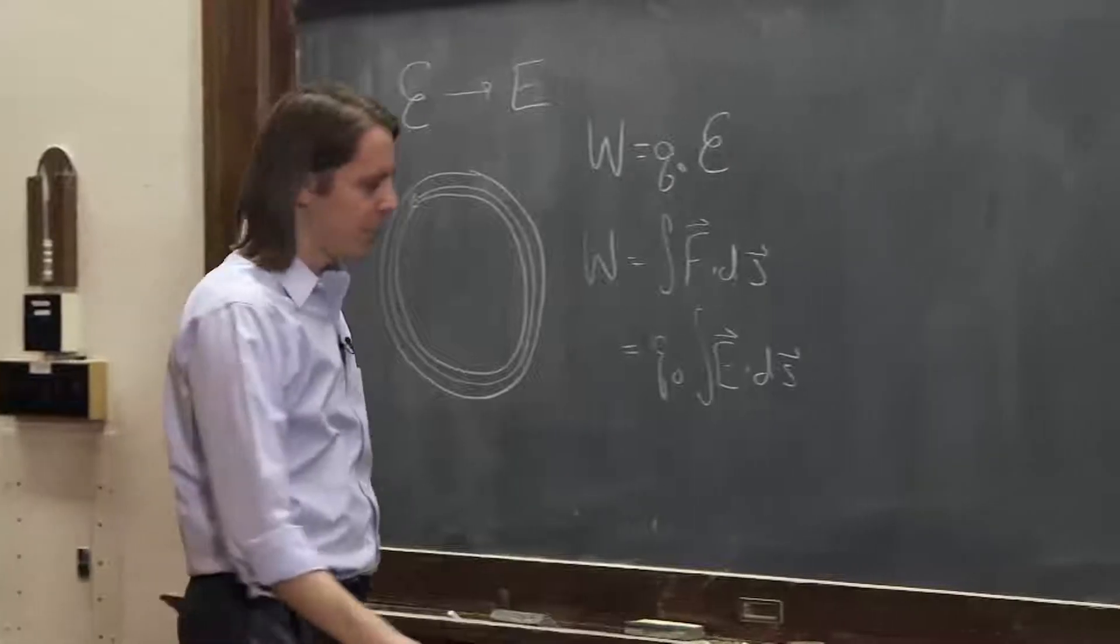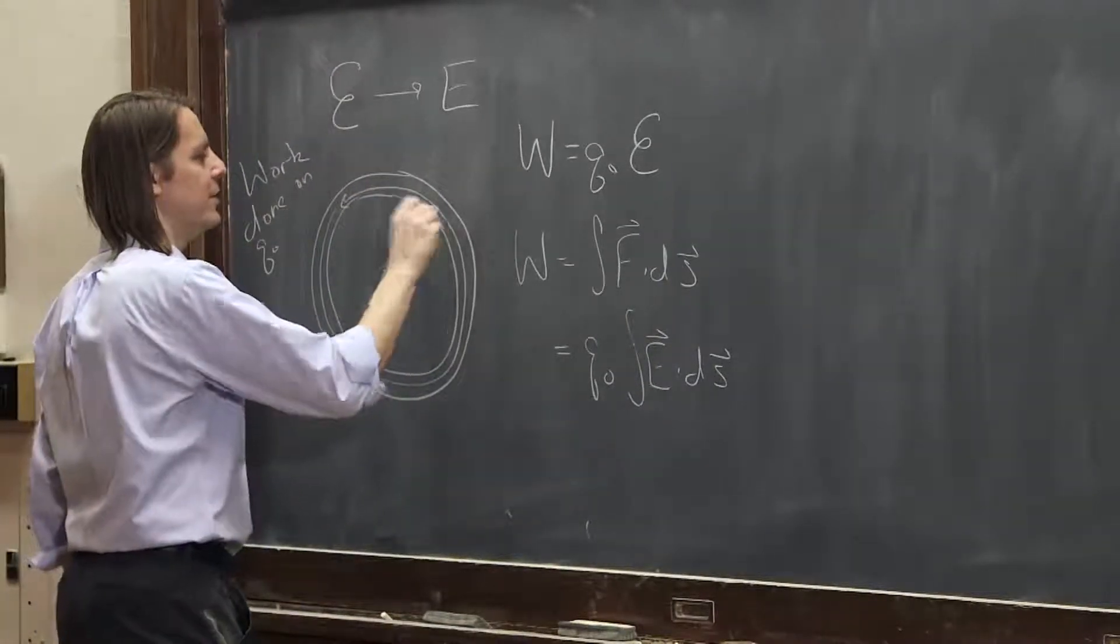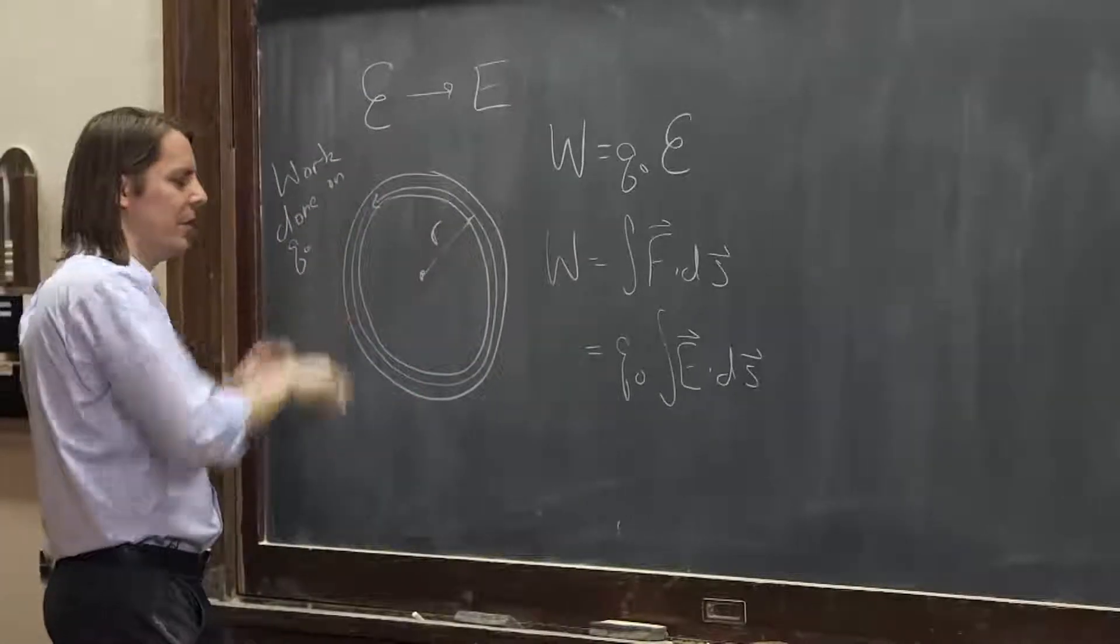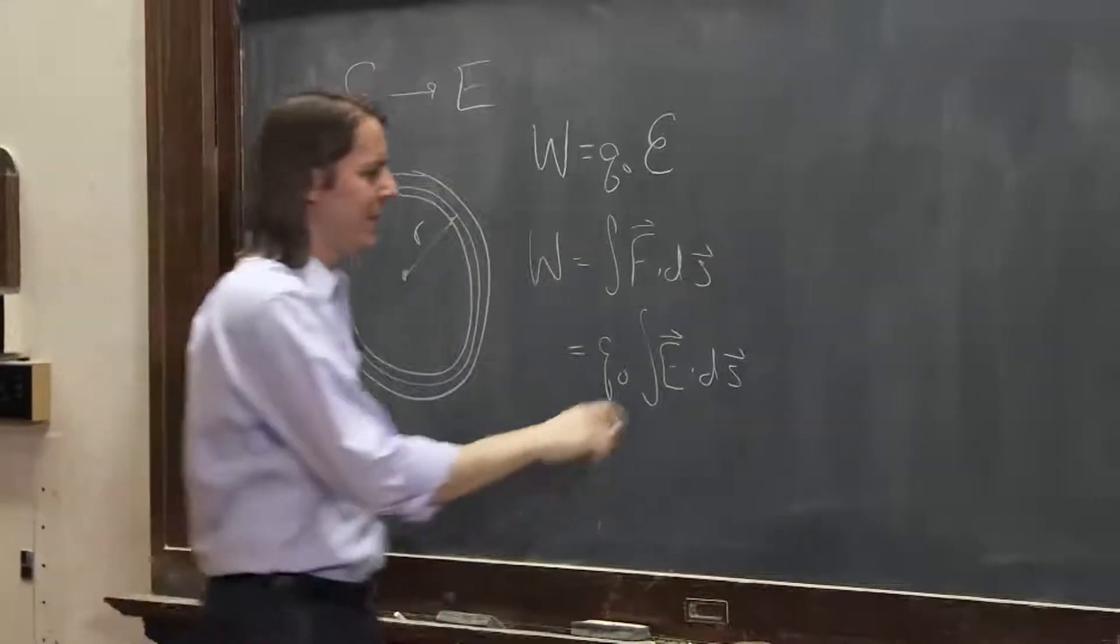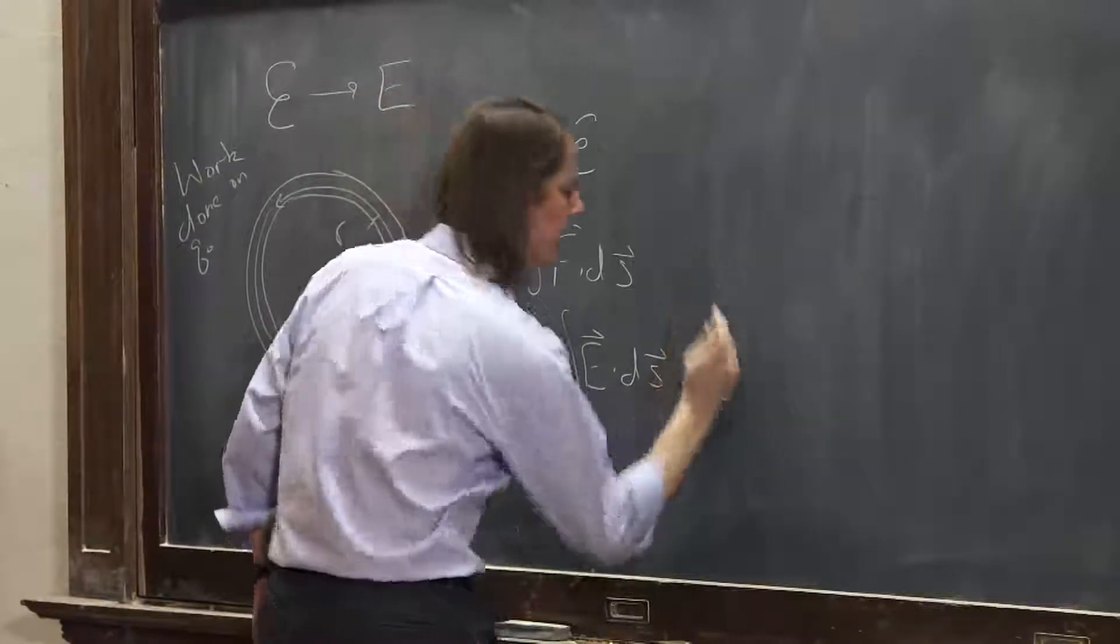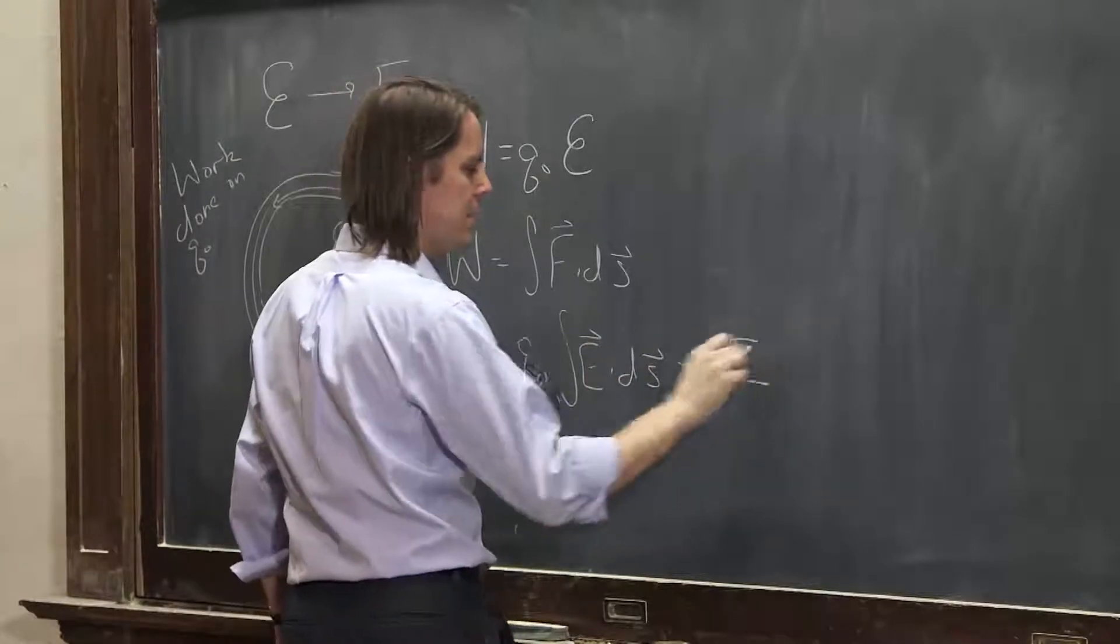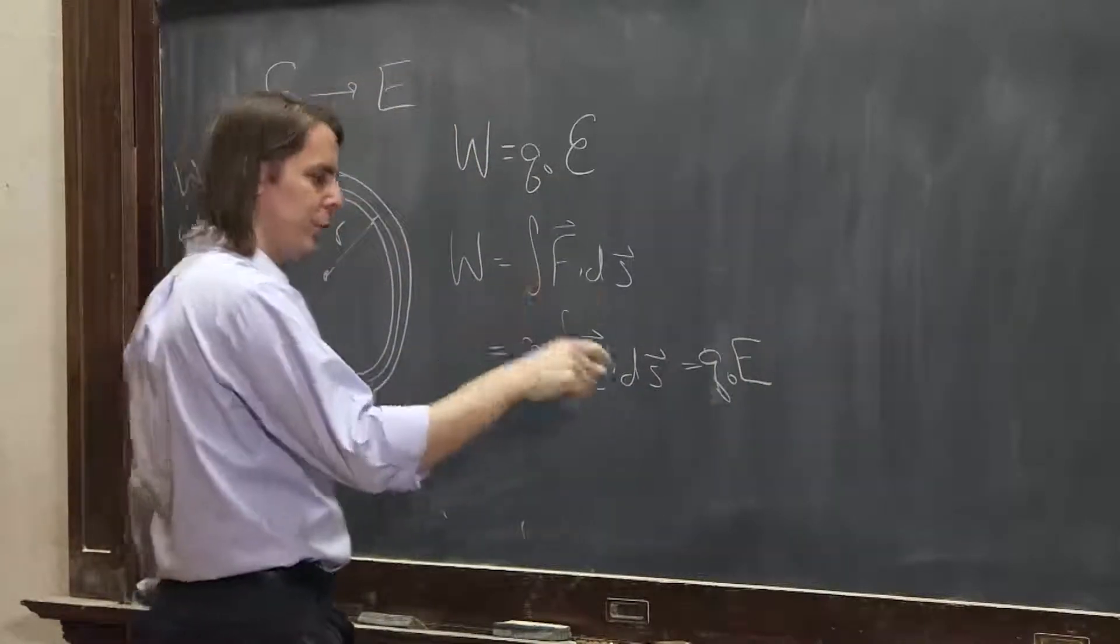So we can look at this and say, well, around a loop, if we're on a loop at some fixed radius, say it's thin, so we're just dealing with a fixed radius around the loop, that would be Q0 E times the circumference, which is 2πr.